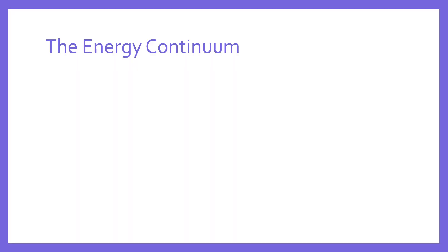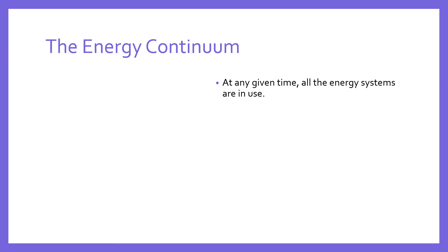The energy continuum is this idea that the three energy systems are all at work at the same time. So at any given time, all the energy systems are in use. However, not all of the energy systems are contributing the same amount of energy as the others all the time.